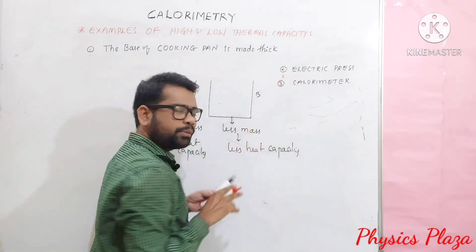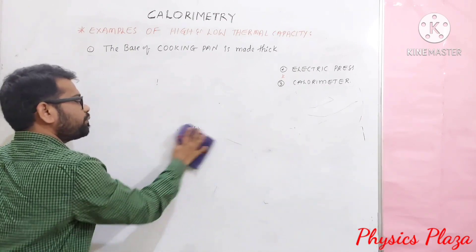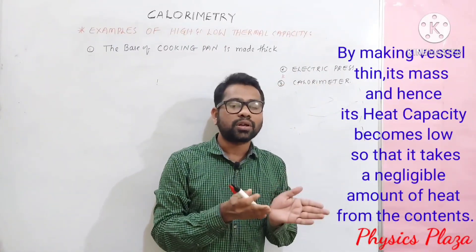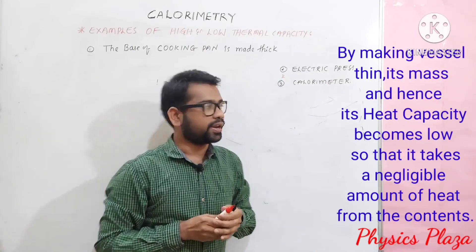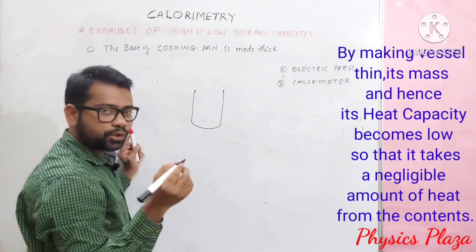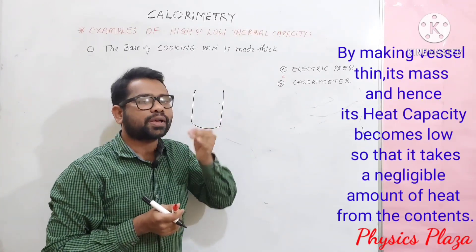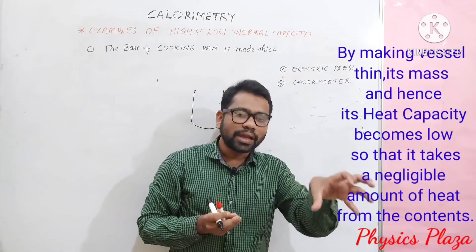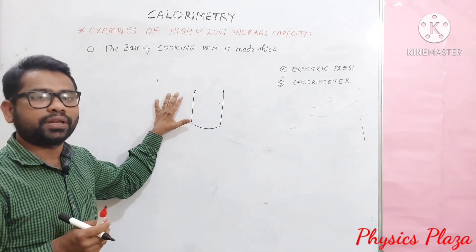Coming to the calorimeter — it is a cylindrical vessel made with a thin sheet of copper, used to find the amount of heat lost or gained, working on the principle of calorimetry. In the calorimeter, a thin copper vessel is used because its thickness is less, so its mass is less, giving it less heat capacity. As the vessel has less heat capacity, it absorbs only a negligible amount of heat energy from the contents — that is exactly what we want.